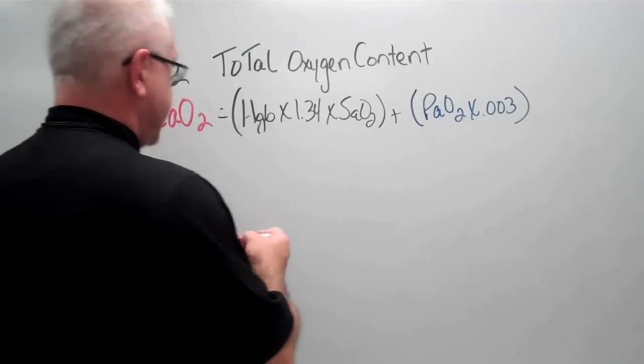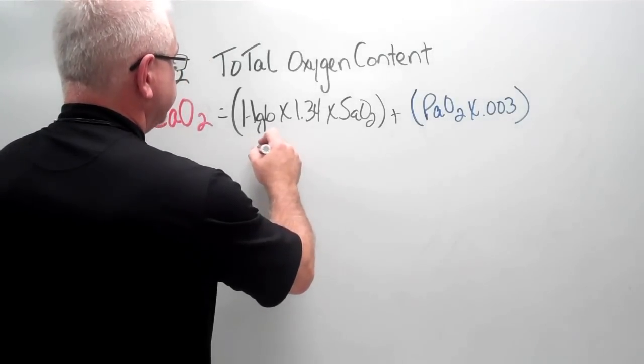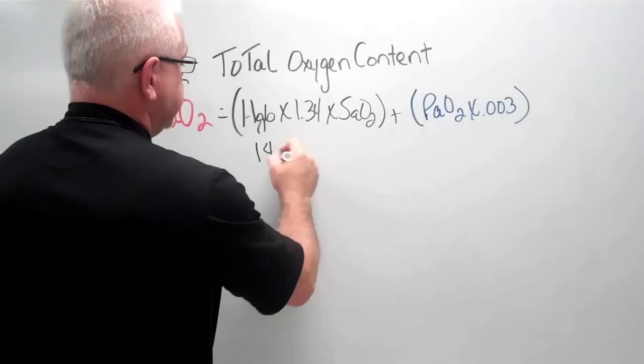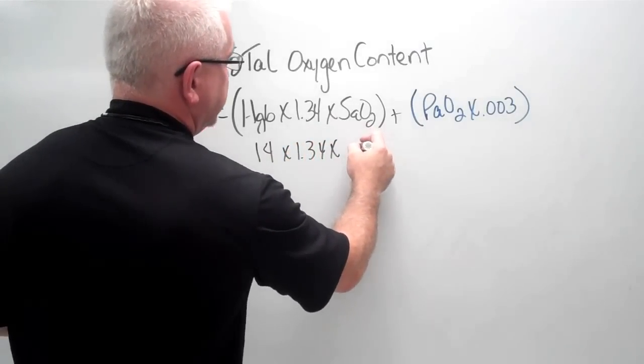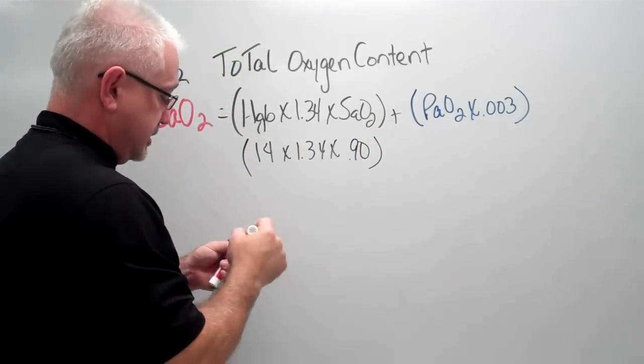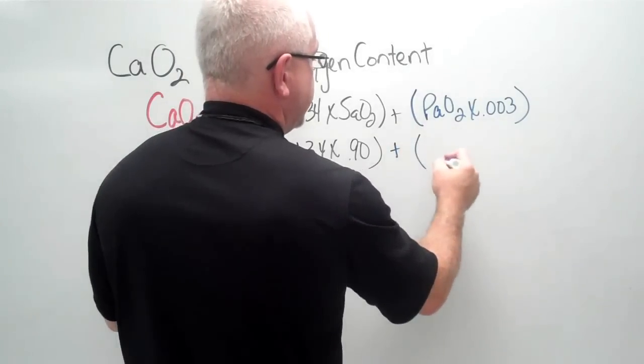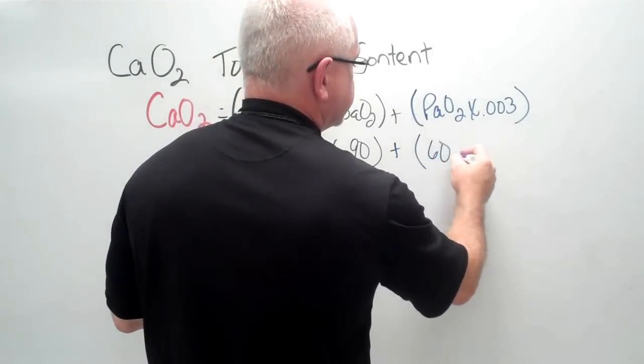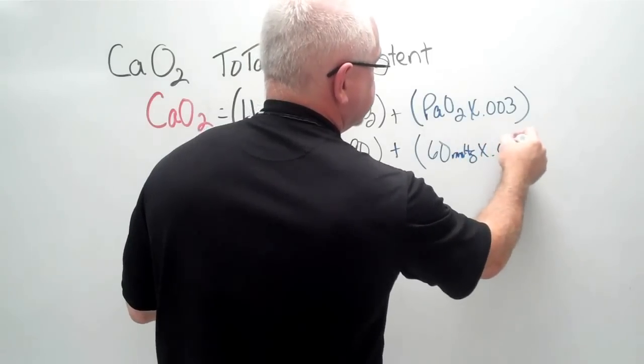But first part, let's just say our patient has a hemoglobin count of 14 times 1.34 times the saturation of 90% plus a PaO2 of 60 millimeters of mercury times 0.003.